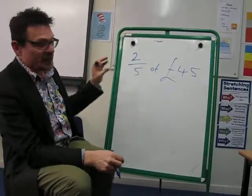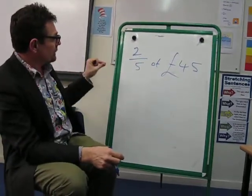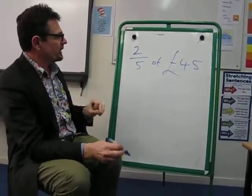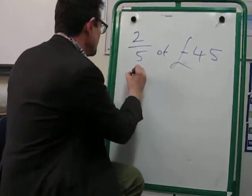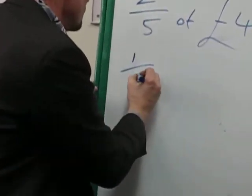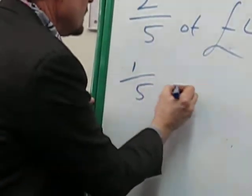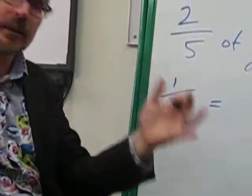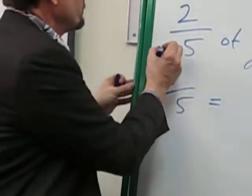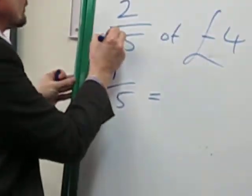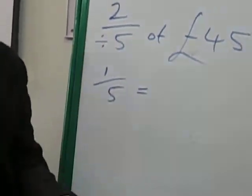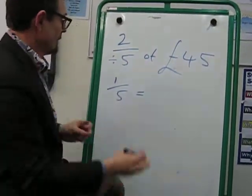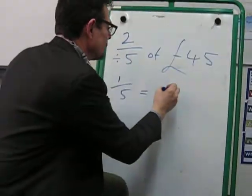Before we get to the end we have to start. We first need to find what 1 fifth of 45 is. So 1 fifth is going to equal — we have to divide 45 by the denominator. So 45 divided by 5 equals 9. Brilliant — 9 pounds.